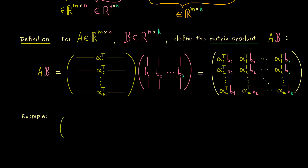For A, let's choose a 2 times 3 matrix with entries 1, 2, 3, 4, 5, 6. And now for the matrix B, we need exactly 3 rows. Let's take 2 columns. So now we know these two matrices can be multiplied, and indeed what should come out is a 2 times 2 matrix.